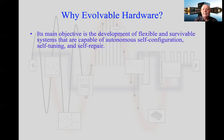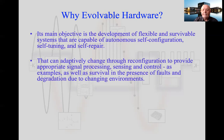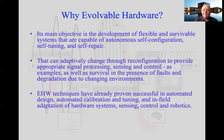Why do we want to use evolvable hardware? It allows us to develop flexible and survivable systems — systems capable of doing things without human intervention, autonomously. Obvious examples include self-reconfiguration, tuning parameters to make themselves better over time, and self-repair when things go wrong. We can adaptively change through reconfiguration and evolutionary techniques for signal processing, sensing, and control. A key example is fault tolerance — allowing a system to survive by changing itself autonomously.